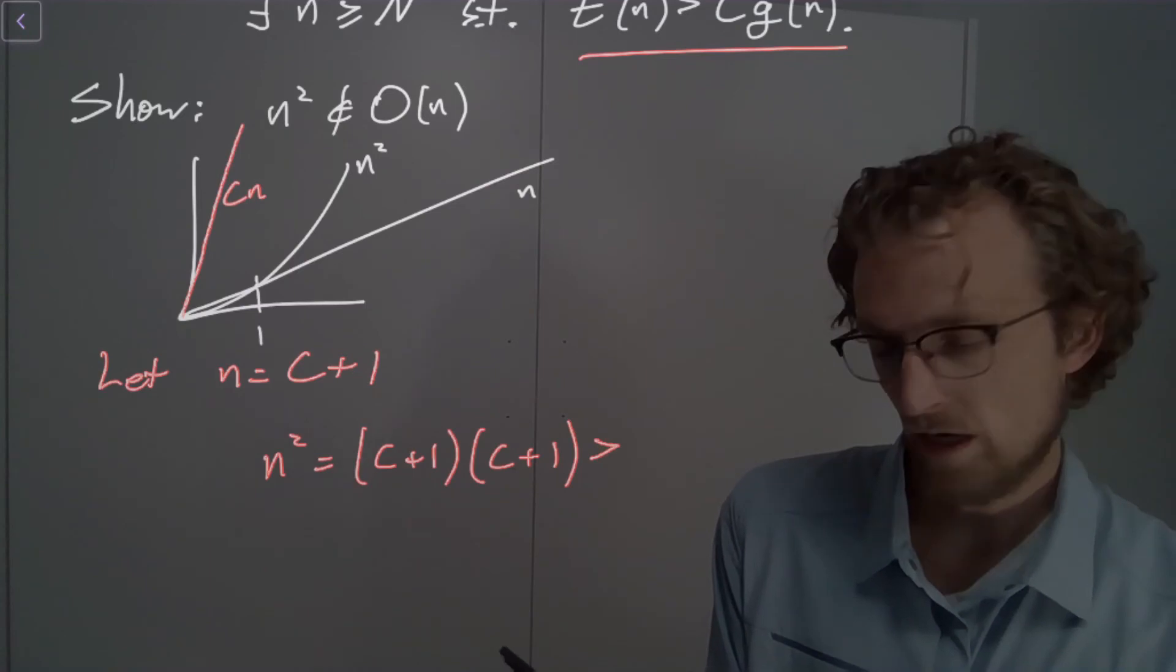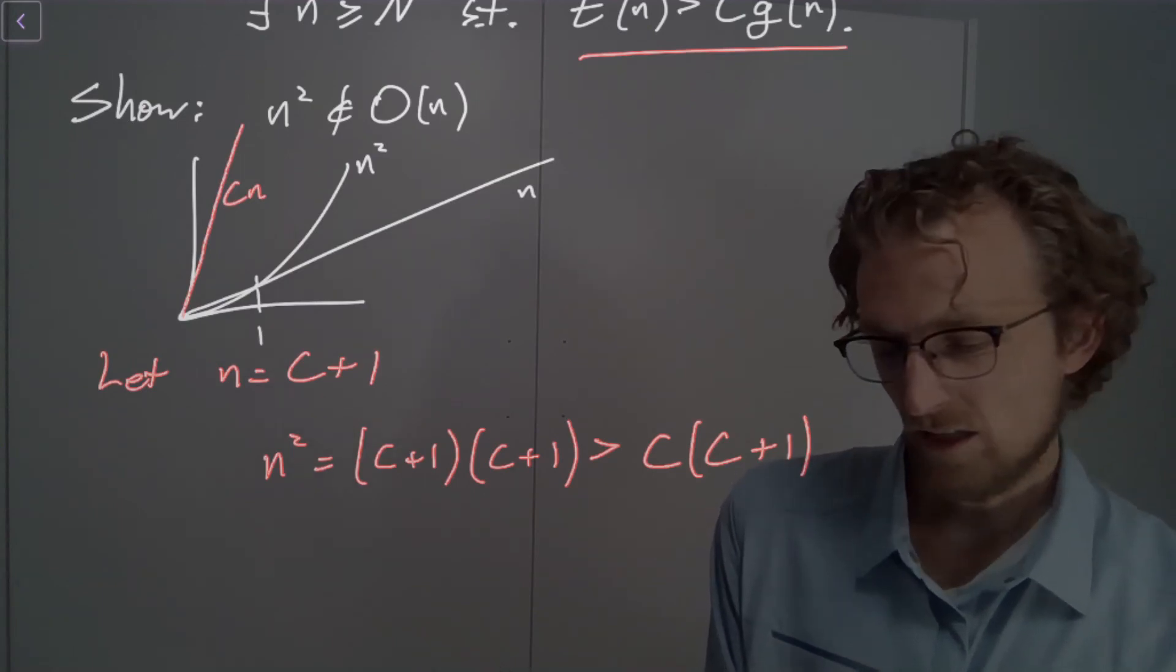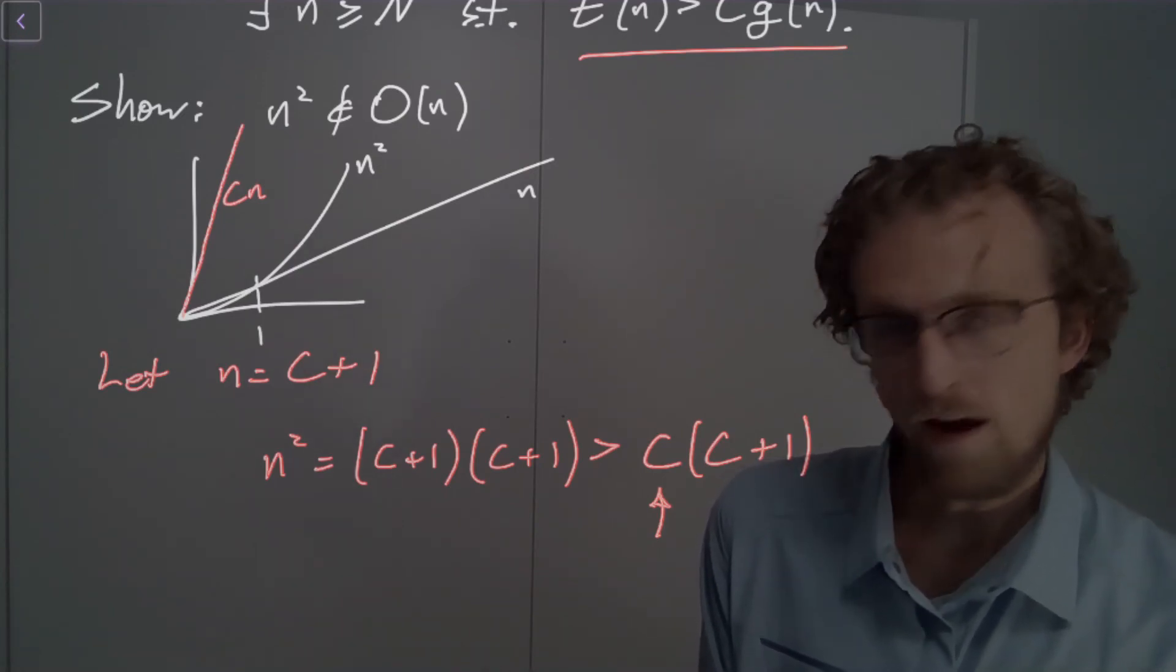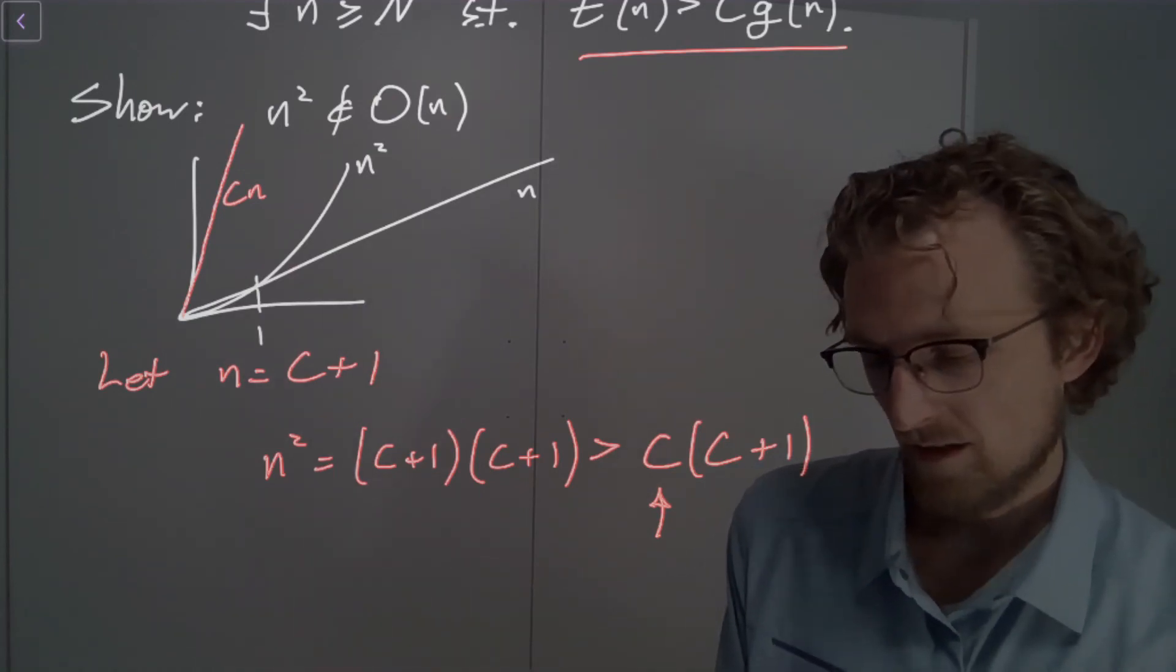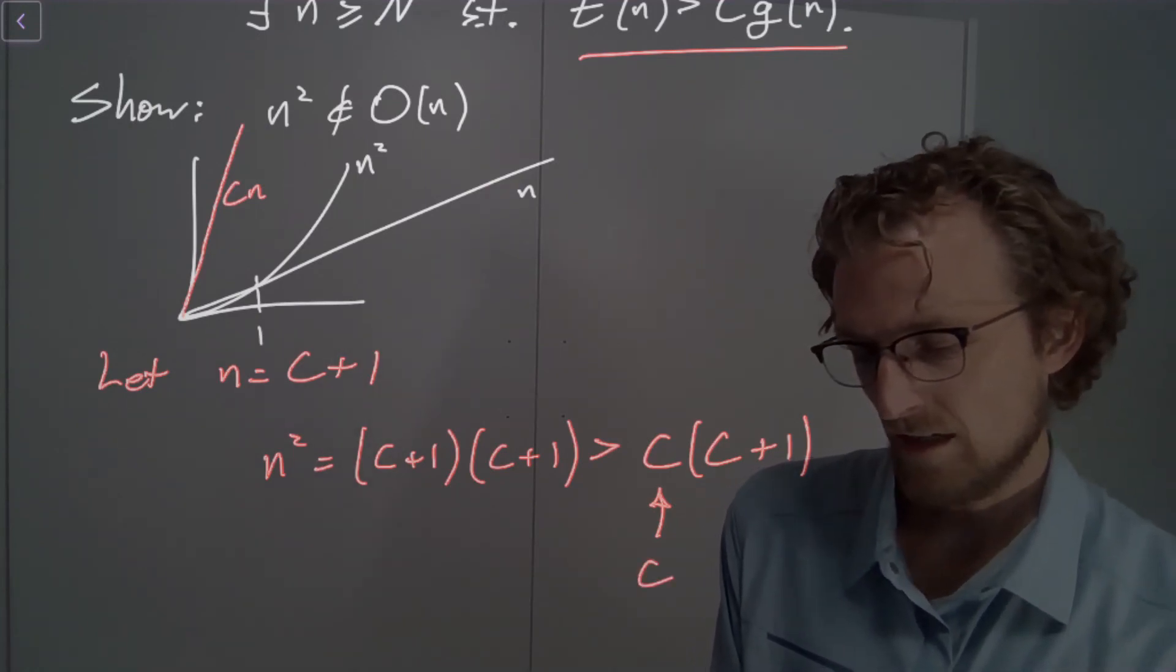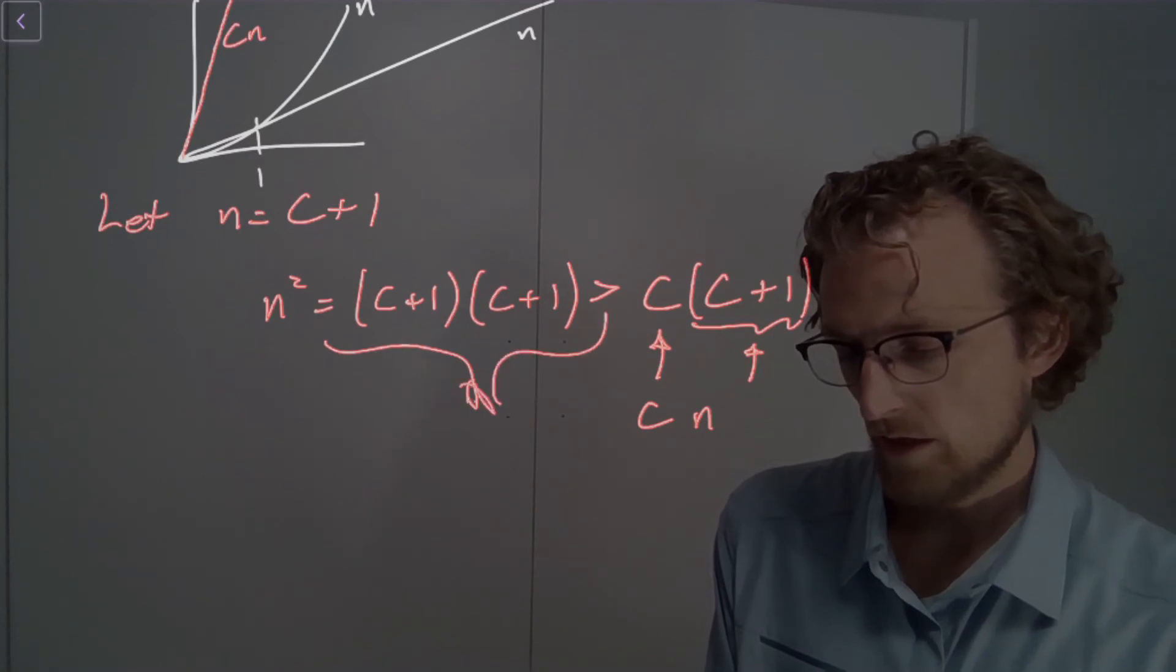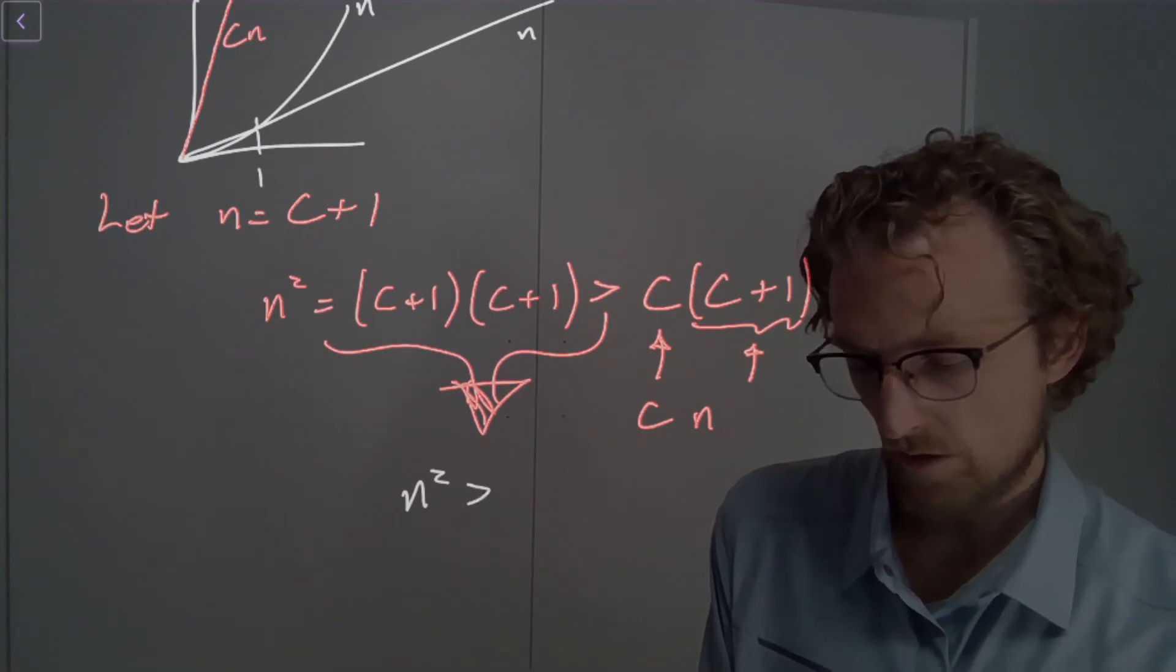And so what I've just done is I've just shown that no matter what C you give me, if I evaluate N squared, one past the C that you gave me, I get something that's bigger than C times N. So this is just C. This is N. And so what do I have? Well, I can put together this with this, that's a big arrow there and say, look, N squared is greater than C of N.